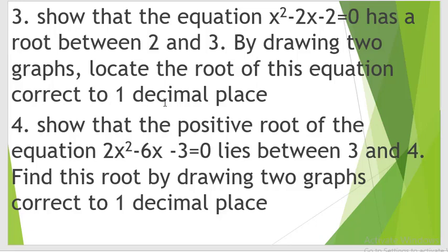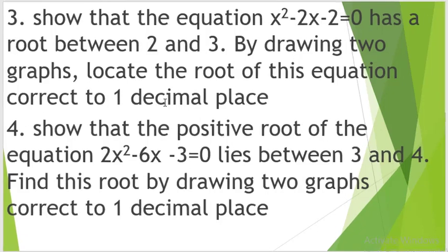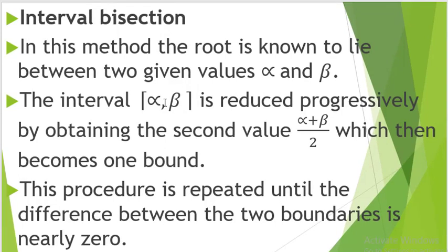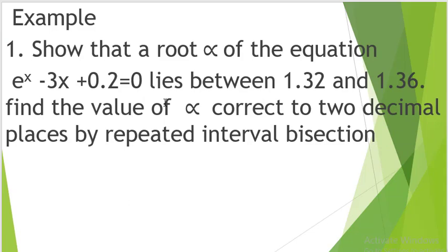Now let us advance and see another small chapter: interval bisection. In this method, the root is known to lie between two given values, alpha and beta. The interval alpha and beta is reduced progressively by obtaining the midpoint value, which is alpha plus beta over 2, which then becomes one bound. This procedure is repeated until the difference between the two boundaries is near 0.